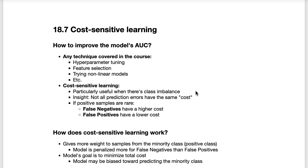The insight behind cost-sensitive learning is that not all prediction errors have the same cost. This can refer to an actual dollar cost of one type of error versus another, or in our case, the real-world implications of a certain type of error. When there's severe class imbalance, it's usually the case that false negatives — in which positive samples are identified as negative — have a higher cost than false positives. This makes sense because the positive samples are rare occurrences, and thus we're more interested in locating them. In simple terms, we would prefer a false positive to a false negative.